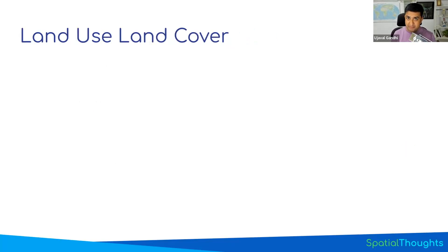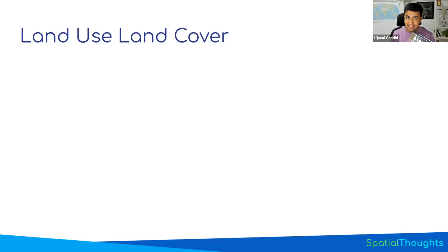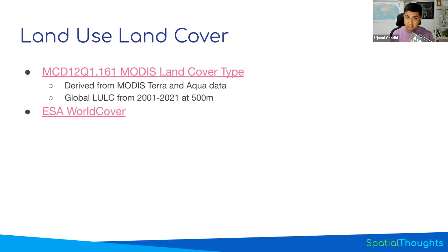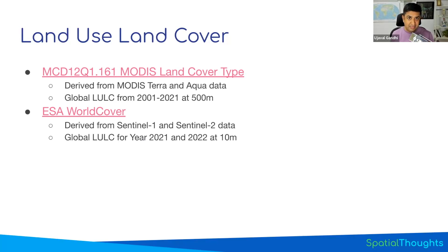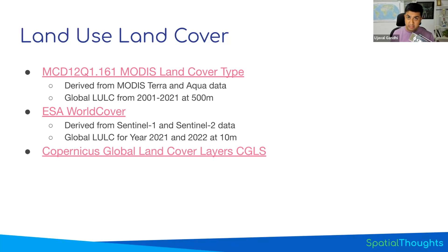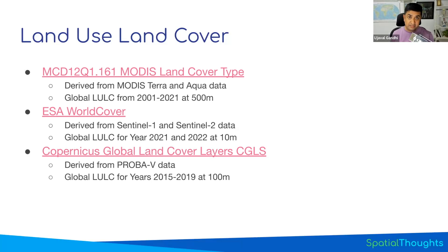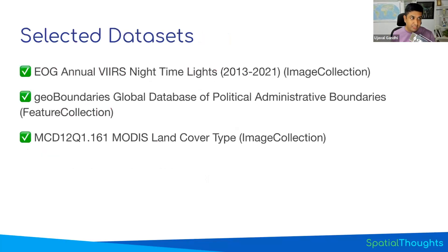Next, we need land cover datasets. We have to compute statistics over both urban pixels and agriculture pixels, so we need to know which pixels are which. The most widely used dataset is MODIS — there's an annual land cover product available at 500 meter resolution. There's also ESA World Cover, currently the highest resolution global product available at 10 meter spatial resolution, but only available for 2021 and 2022. There's also CGLS, a 100 meter product with a time series classification from 2015 to 2019. Since we want a time series and our VIIRS data is 500 meter resolution, the MODIS land cover is a great fit. So we have three datasets: two image collections and one feature collection.